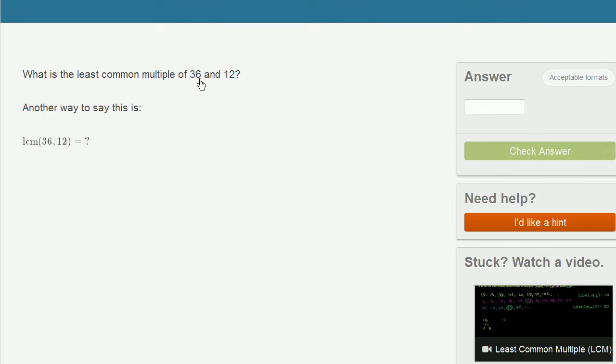Well, this one might pop out at you, because 36 itself is a multiple of 12. And 36 is also a multiple of 36. It's 1 times 36. So the smallest number that is both a multiple of 36 and 12, because 36 is a multiple of 12, is actually 36.